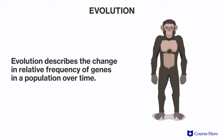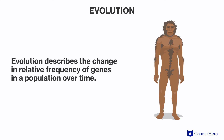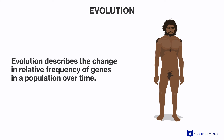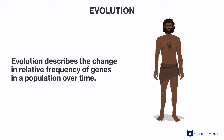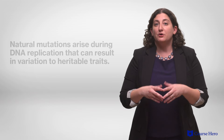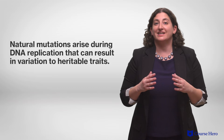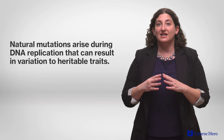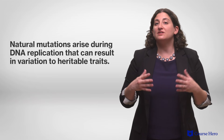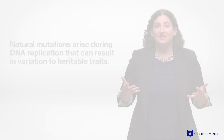We use the term evolution to describe the change in relative frequency of genes in a population over time, which occur naturally because of evolutionary change. This happens for a number of reasons. First, there are natural mutations or errors that arise during DNA replication that can result in variations to heritable traits.